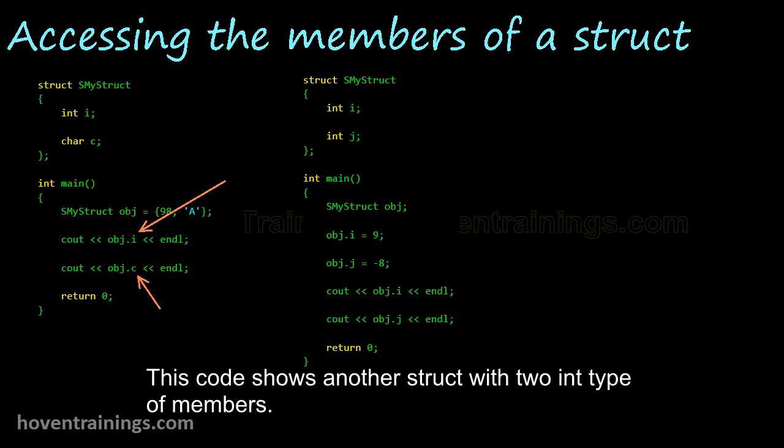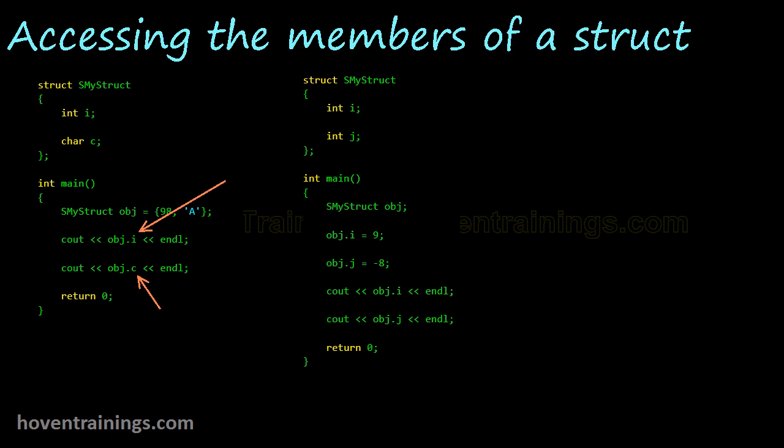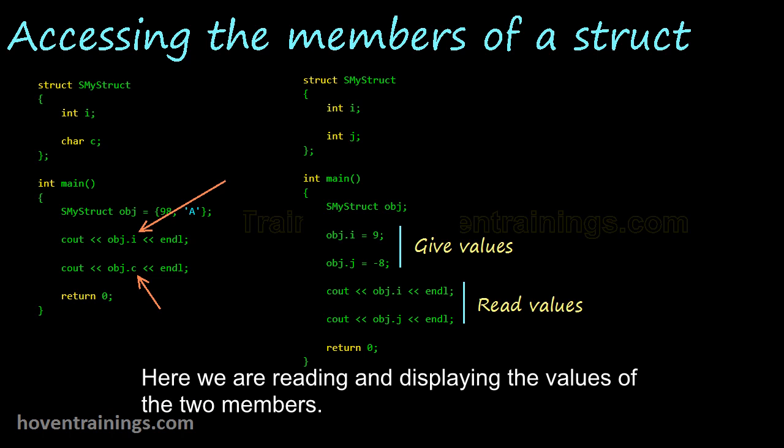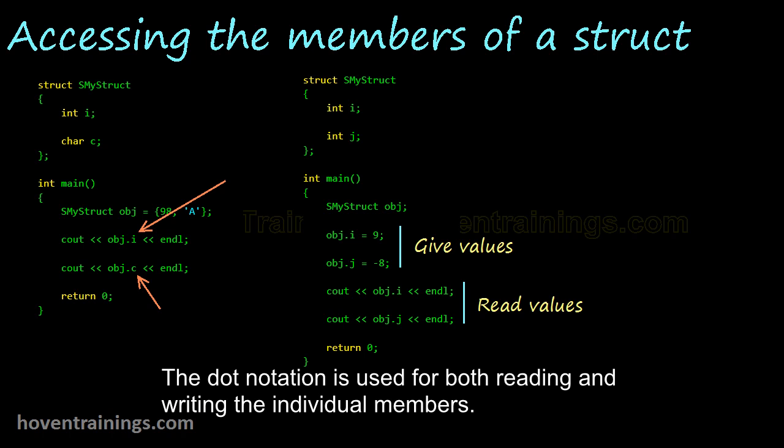This code shows another struct with two int type members. The members can be accessed by using the same dot notation. Here we are giving values to the members. Here we are reading and displaying the values of the two members. The dot notation is used for both reading and writing the individual members.